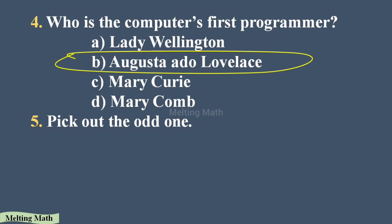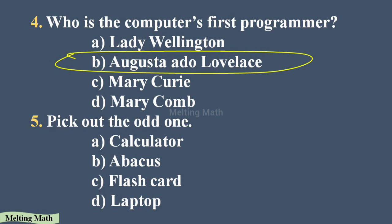The fifth question: pick out the odd one. We have to choose the unrelated item. Option A: calculator, Option B: Abacus, Option C: flashcard, Option D: laptop. Calculator, Abacus, and laptop all come under mathematical calculation tools. The different one is flashcard, so Option C is the correct answer.